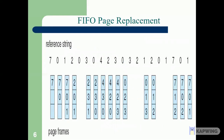Here is an example of FIFO page replacement. The reference string is: 7, 0, 1, 2, 0, 3, 0, 4, 2, 3, 0, 3, 2, 1, 2, 0, 1, 7, 0, 1. The frame size is three — frames 1, 2, and 3.